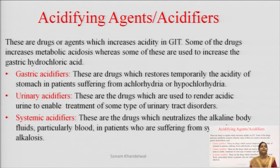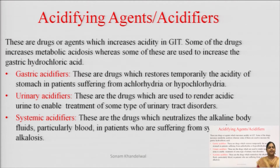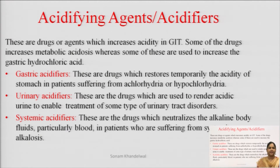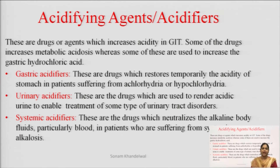Toh ab hum individually jo yeh saari categories maine bhi aapko classification mein batayi hain, hum unko individually padhenge. Sabse pehli category jo thi hai that is acidifying agents aur acidifiers. Ab ye acidifying agents basically karte kya hain — jo ye acidifying agents hain, ye woh drugs ya phir agents hote hain jo hamare GIT tract ki acidity ko increase karte hain. Iske alawa jo kuch drugs hain woh metabolic acidosis karti hain, aur kuch jo drugs hoti hain woh gastric hydrochloric acid ke level ko increase karti hain hamare stomach mein. Toh ismein sabse pehli jo category thi under acidifying agents, it is gastric acidifiers.